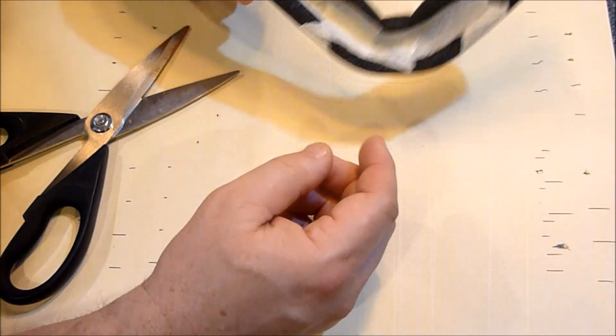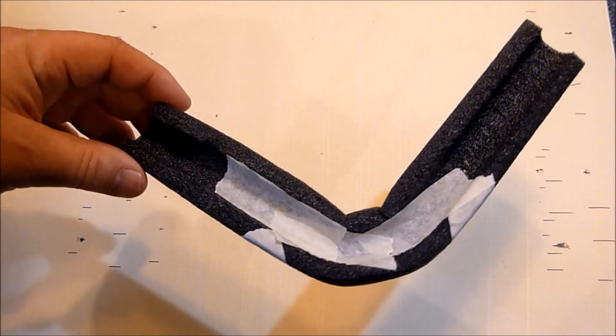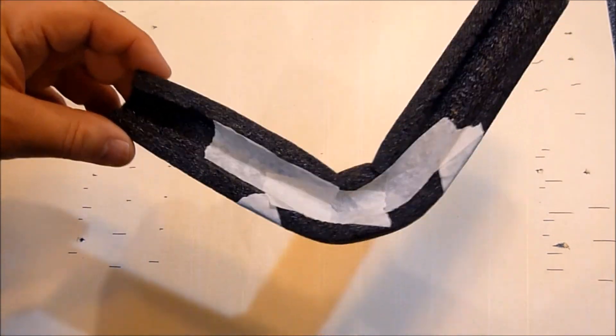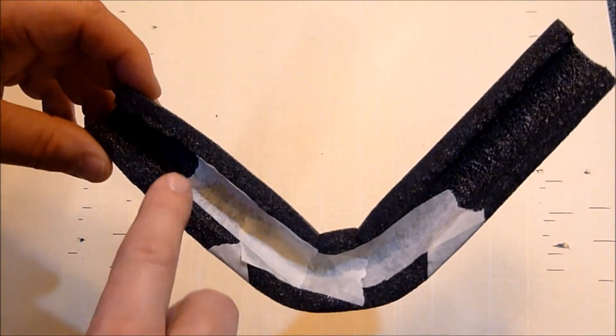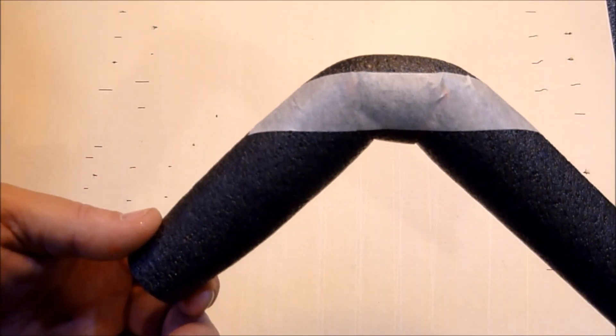It also holds it together nicely. This is what a corner piece looks like. I put a little tape on the inside to smooth it out and a piece of tape across the bottom to hold it in place.